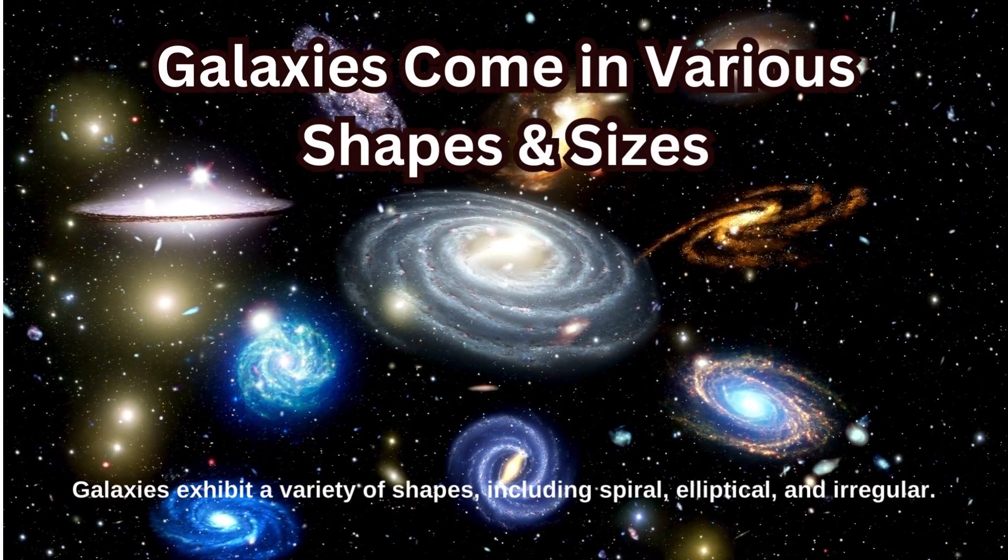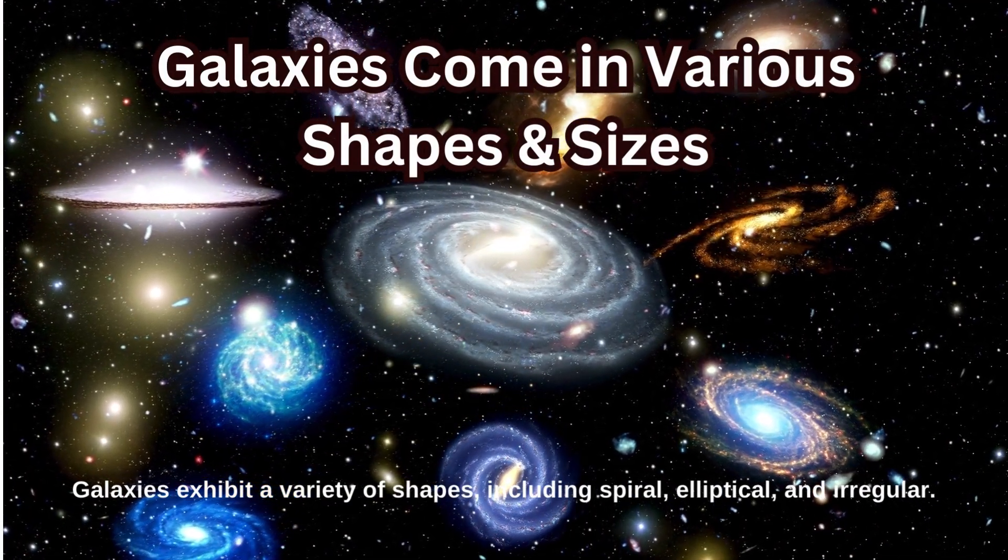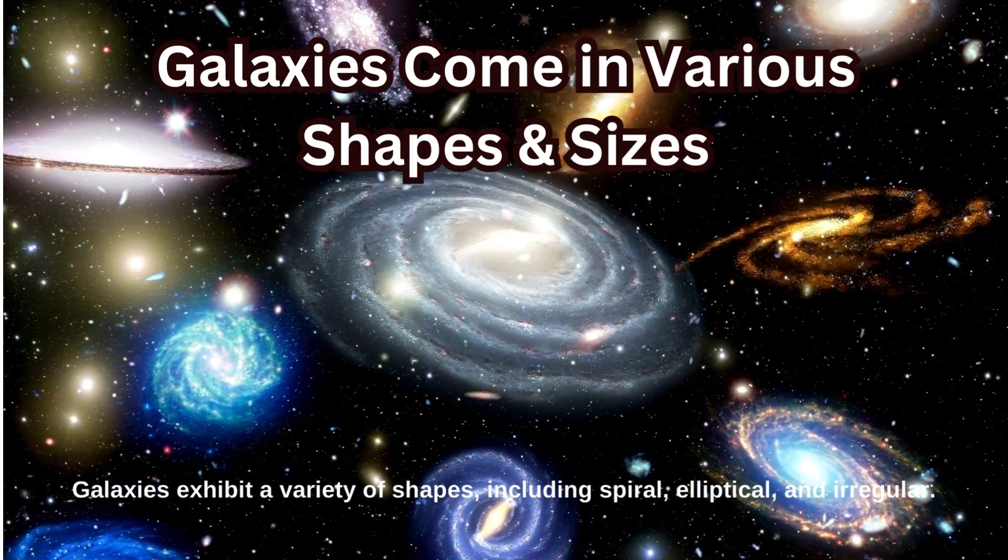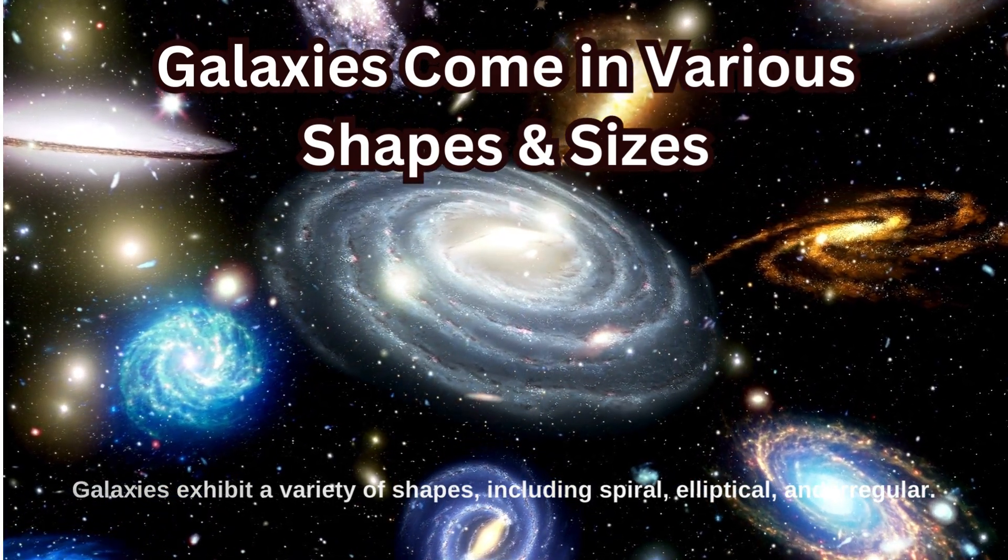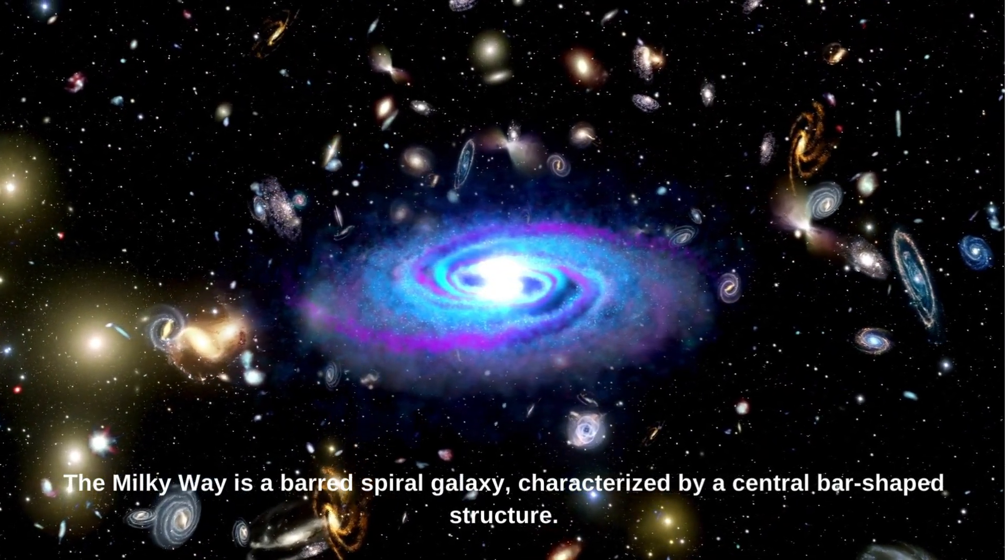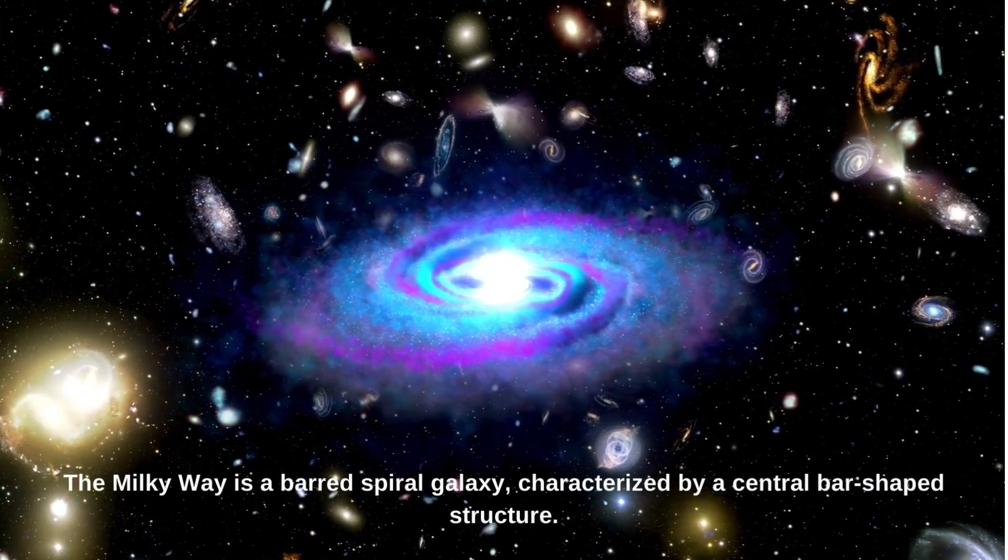Galaxies come in various shapes and sizes. Galaxies exhibit a variety of shapes, including spiral, elliptical, and irregular. The Milky Way is a barred spiral galaxy, characterized by a central bar-shaped structure.